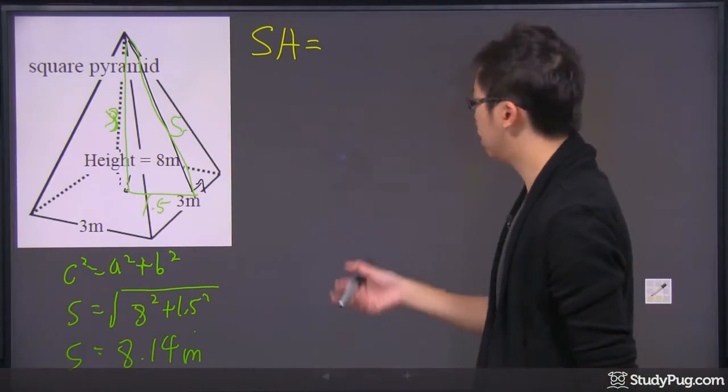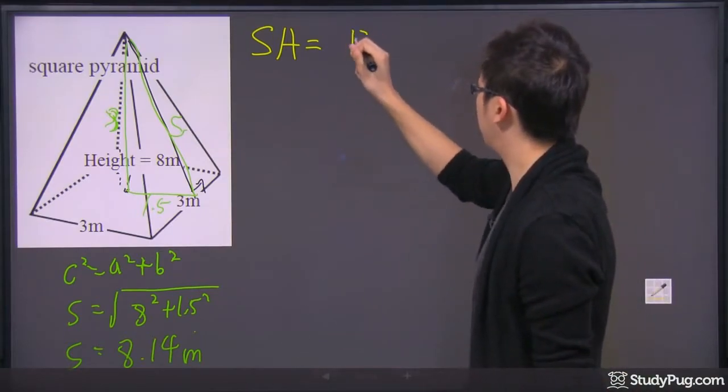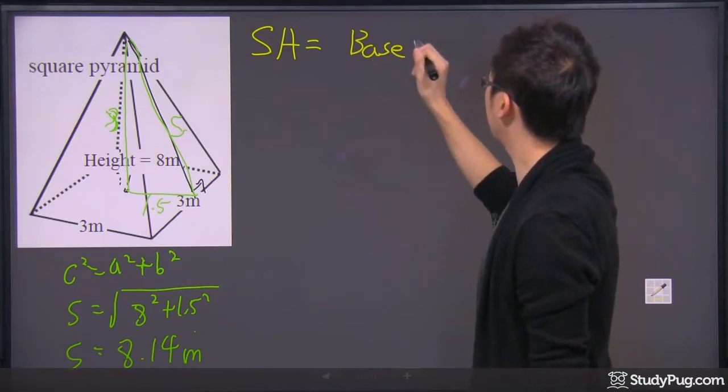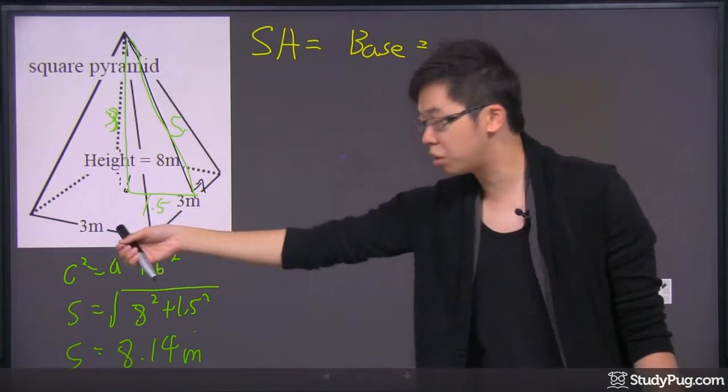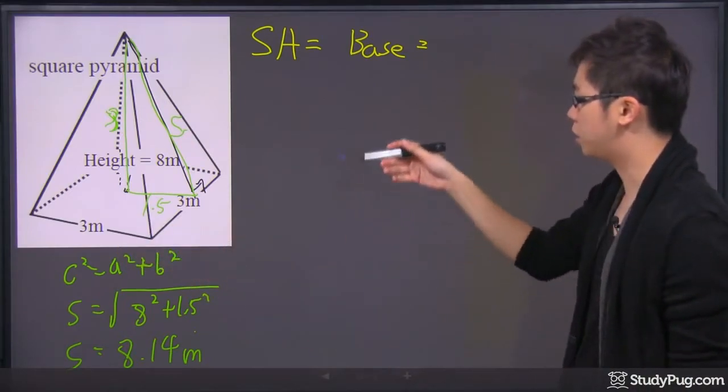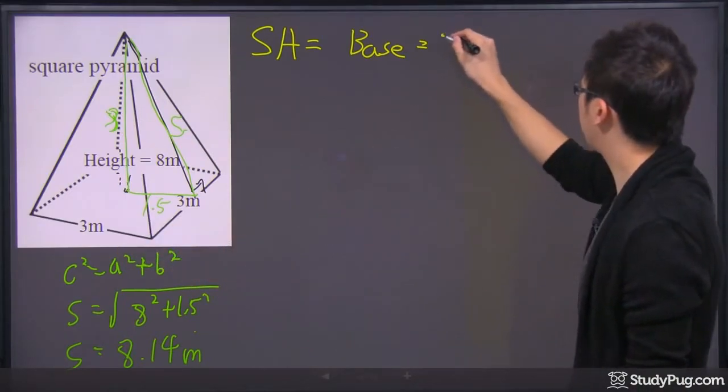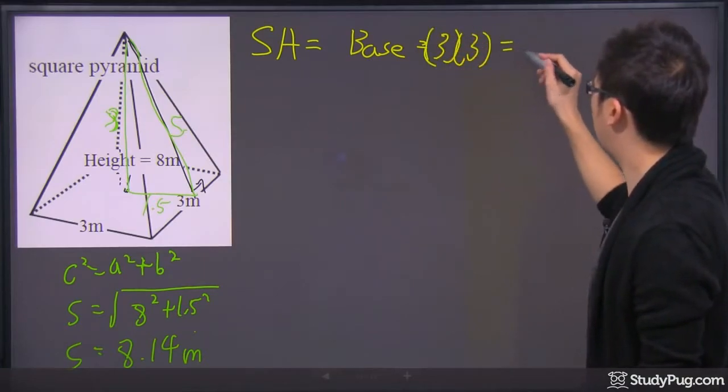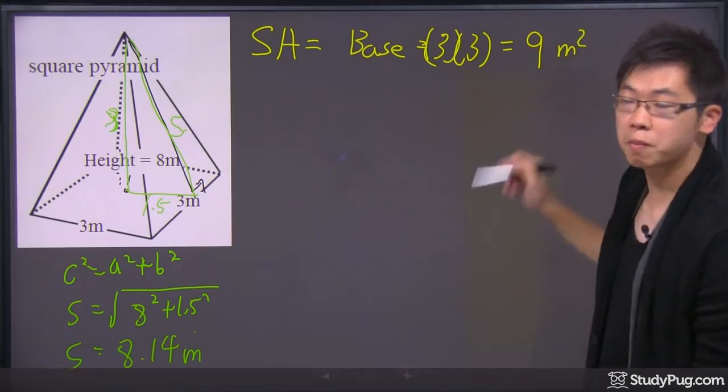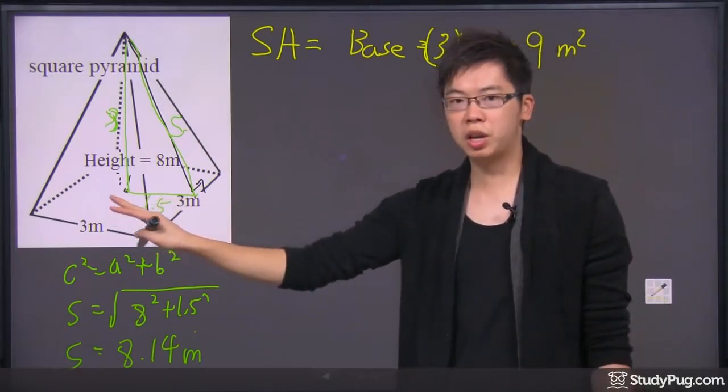The surface area for the base, let's say you just call the base right here, it's just the square on the bottom. It's the 3 and 3. So, we're going to take the side times the side, so we get 3 times the 3. And we're going to get the 9, and it's meter square. So, the bottom piece is done.